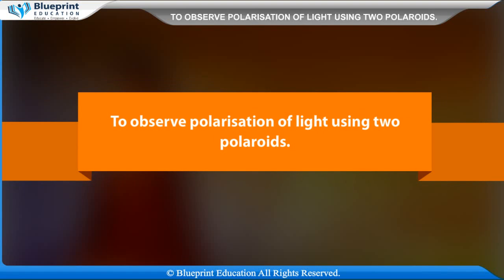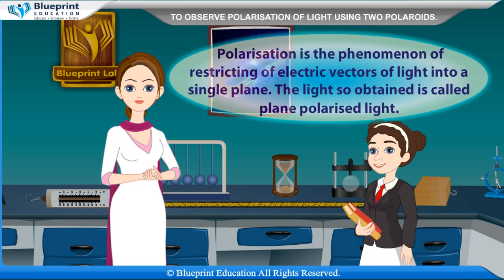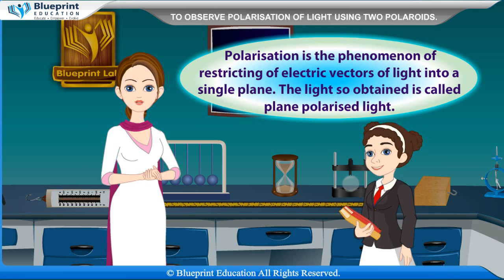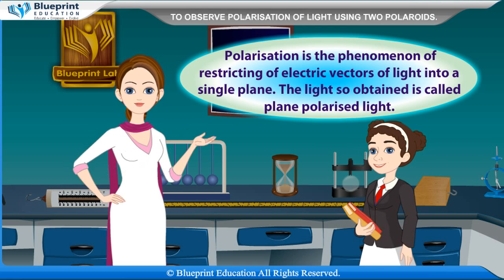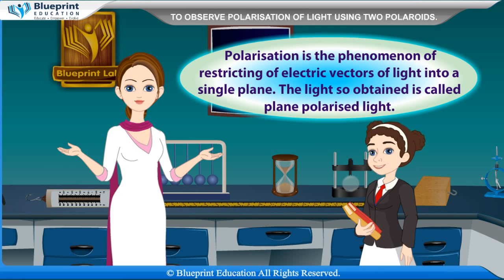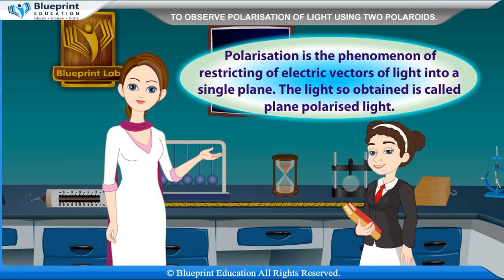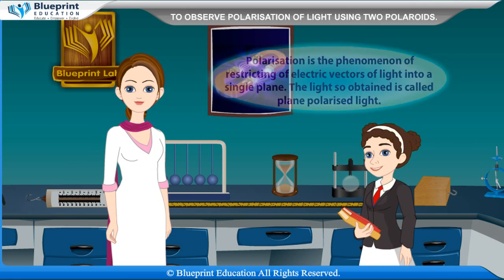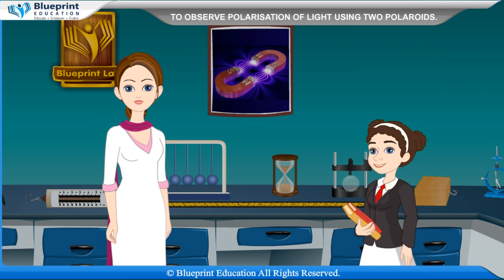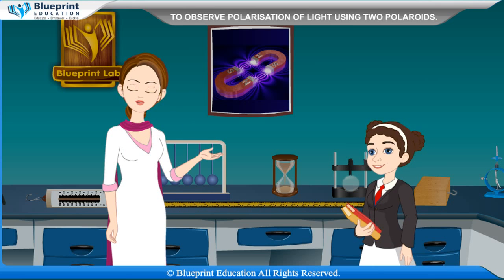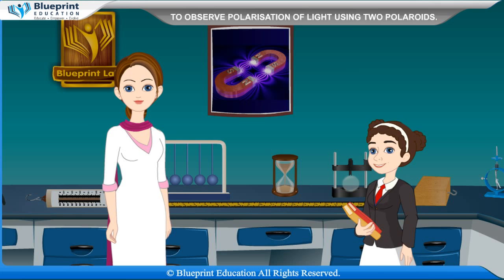To observe polarization of light using two polaroids. Polarization is the phenomenon of restricting the electric vectors of light into a single plane. The light so obtained is called plane polarized light. Polarization of light shows that light waves are transverse in nature.